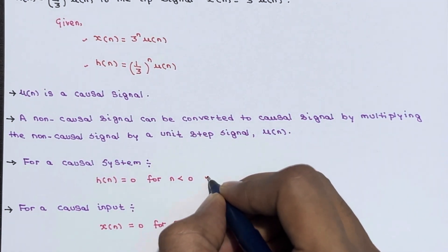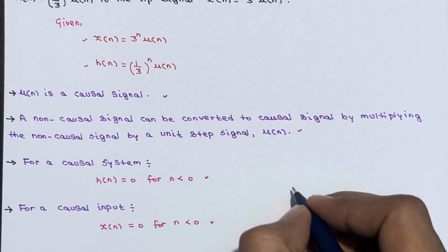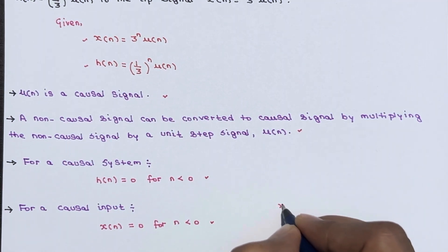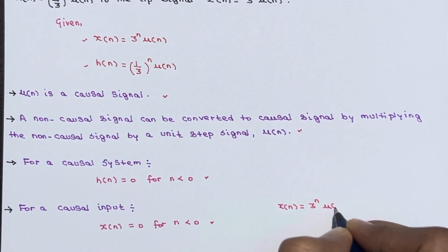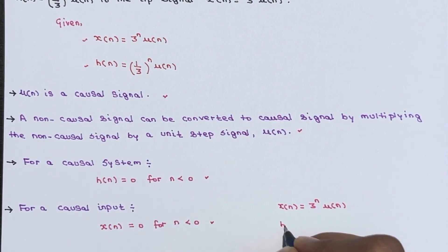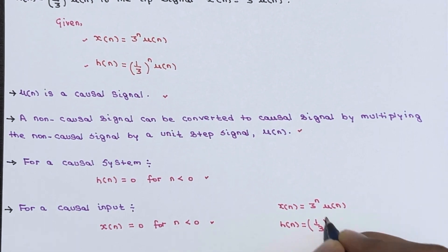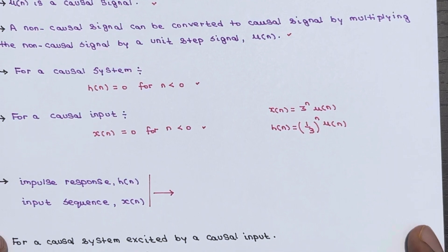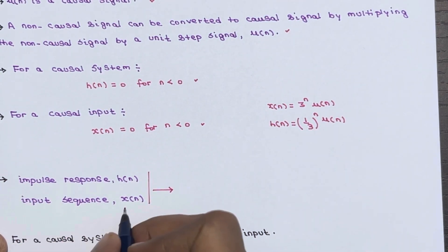Hope you already know about these points — then it is easy to solve this problem. So x(n) = 3^n · u(n) and h(n) = (1/3)^n · u(n). Basically, the impulse response is h(n) and the input sequence is x(n).